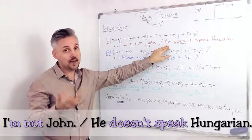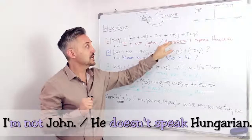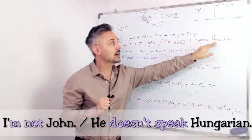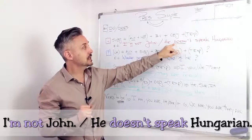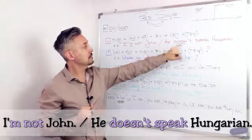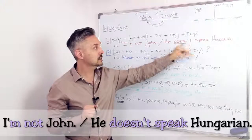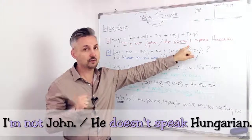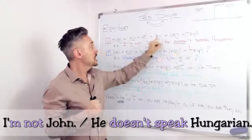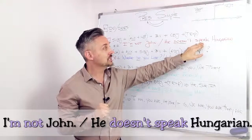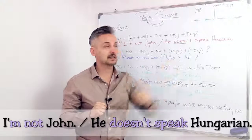Now, an example without the verb to be, would be, he doesn't speak Hungarian. So you can see, does is the auxiliary, plus not, doesn't, does not, we prefer to use the contractive form, then the base of the verb, which is speak, and then the object, Hungarian.